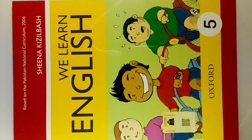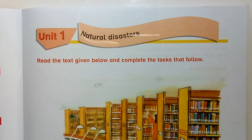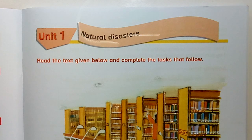Students, we are studying We Learn English, Book 5 by Oxford Publishers. Unit 1: Natural Disasters. Read the text given below and complete the tasks that follow.